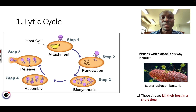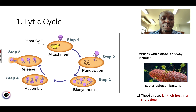Step five: they will kill the cell and go out to look for more cells. This is the lytic cycle. It is a very, very fast cycle. Because of this, the virus can kill the host cell in a very short time.